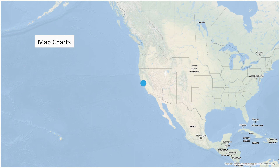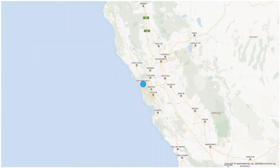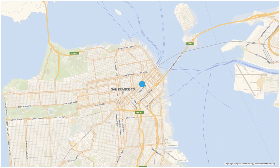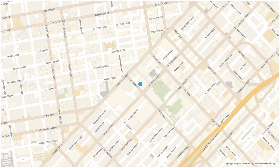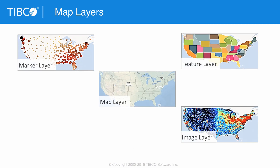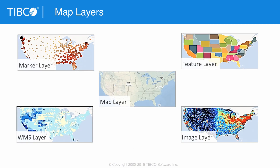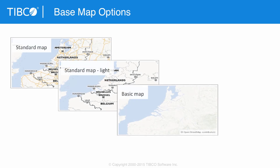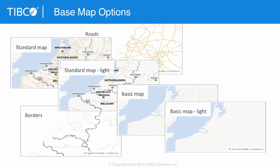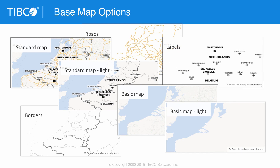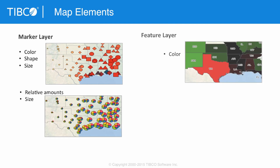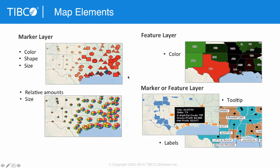The map charts are second to none in the industry, drilling down from country to state to city to neighborhood, all the way down to street level for different applications. The map layers give you ultimate control over the markers, features, base map, images, and web mapping service. Each of these layers can be configured in different ways. The base map has a number of options you can use with or without streets, borders, and labels of cities.